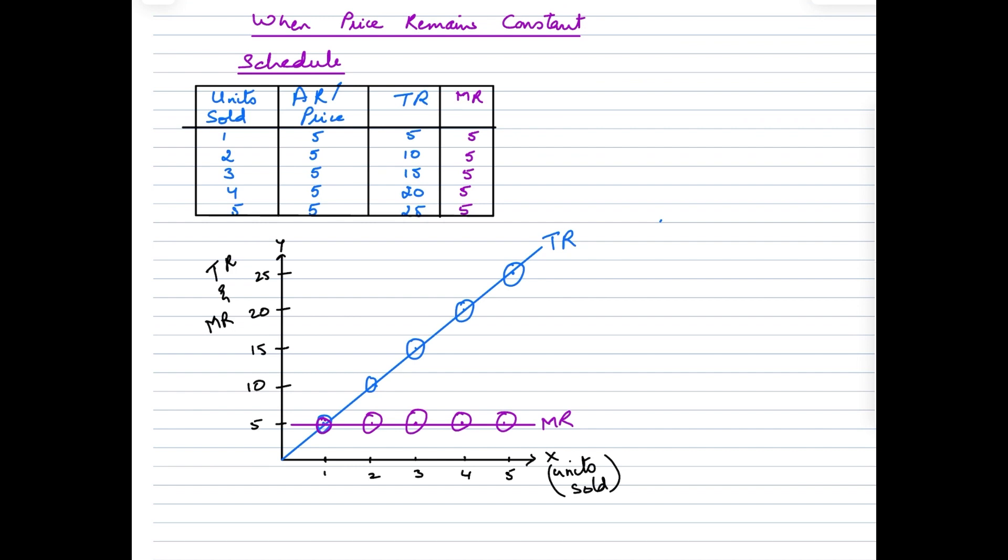So let's take a look at the relationship between TR and MR when the price remains constant. When we look at the schedule here, we see that the price remains constant at 5. The TR is calculated by multiplying Price × Quantity, so we have TR beginning from 5, which is the multiplication between these two, all the way up to 25. Marginal Revenue, which is the difference between two consecutive TRs, would also be 5 since the price is 5.